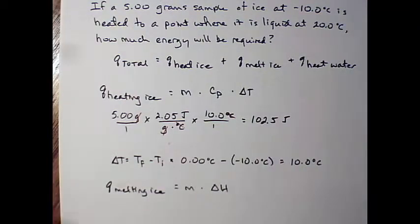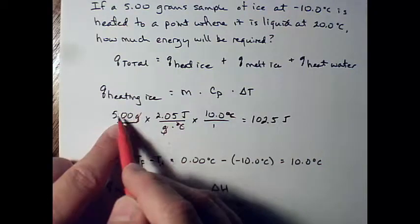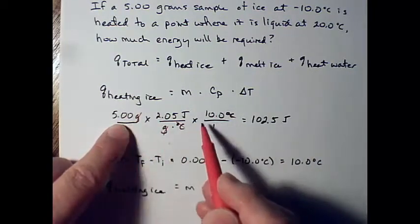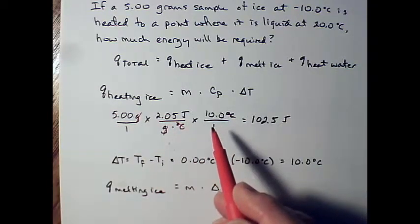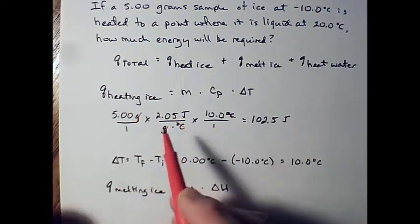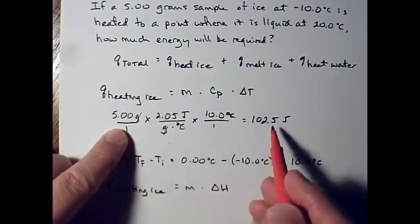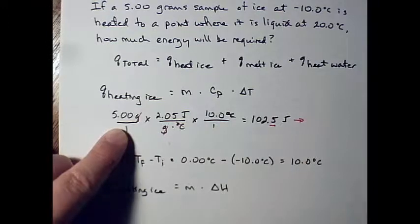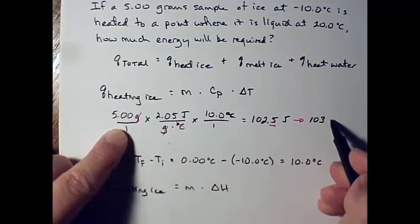We need to round off properly. This number has three significant digits, so we round 102.5 to 103 joules. Draw an arrow and underline the digit being rounded to show your rounding clearly.